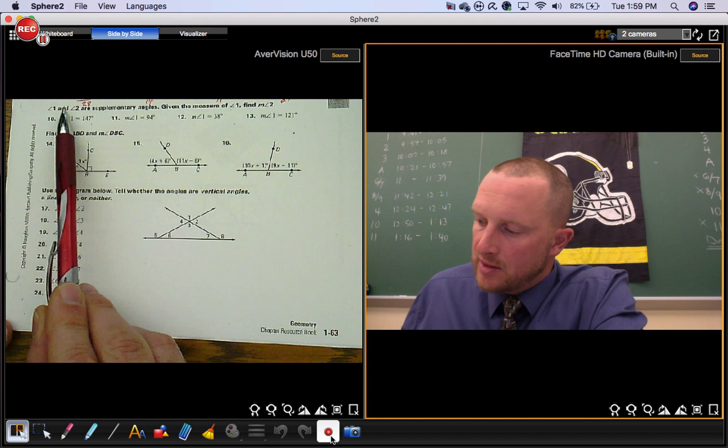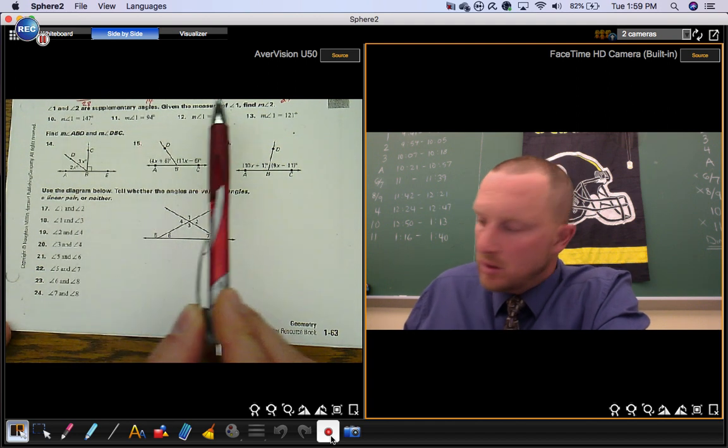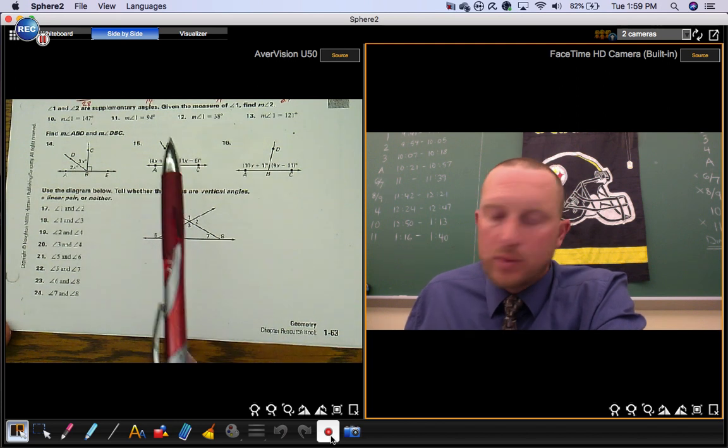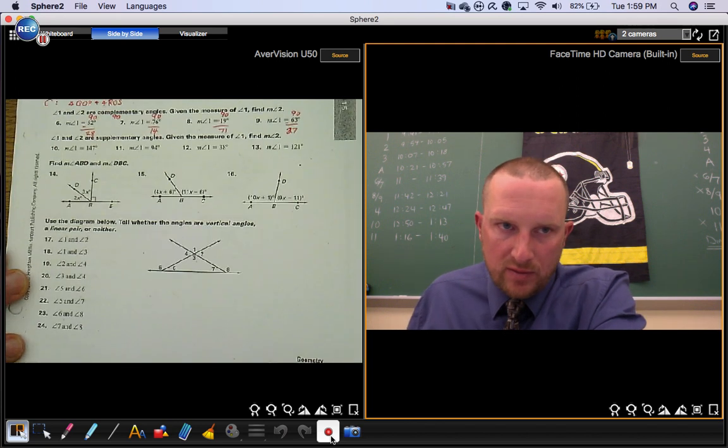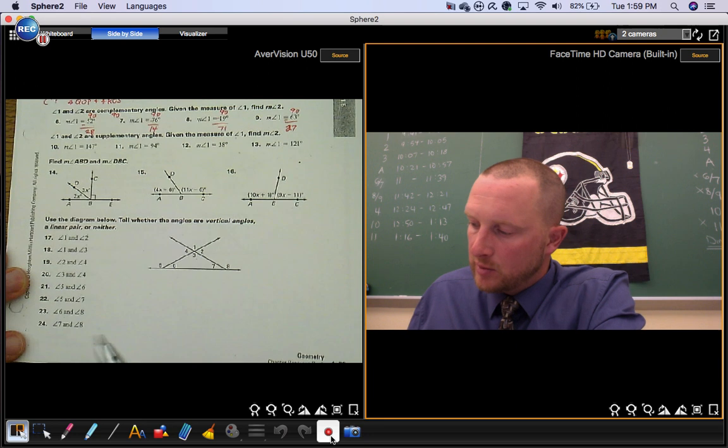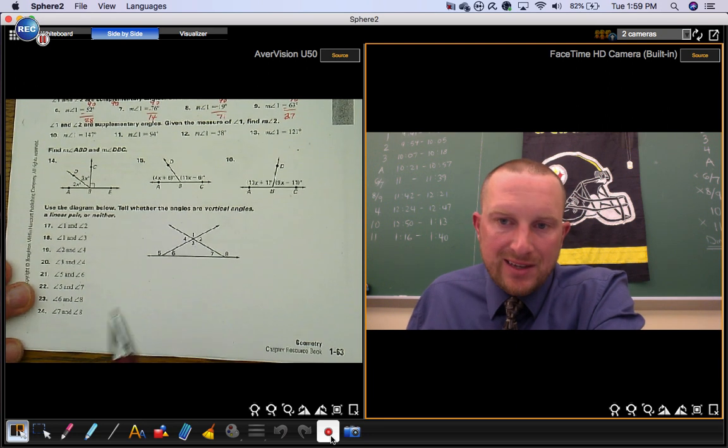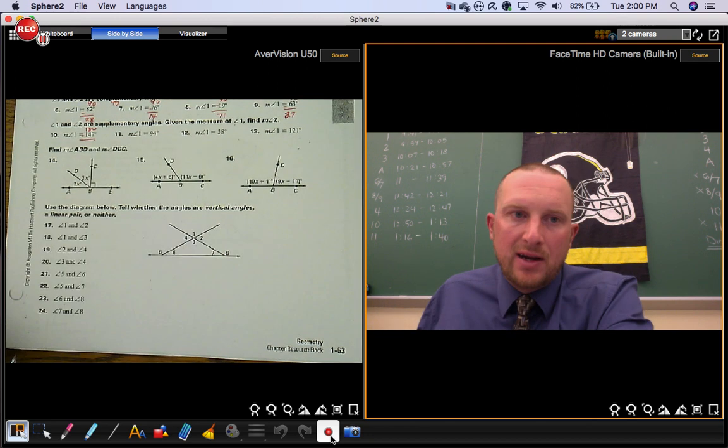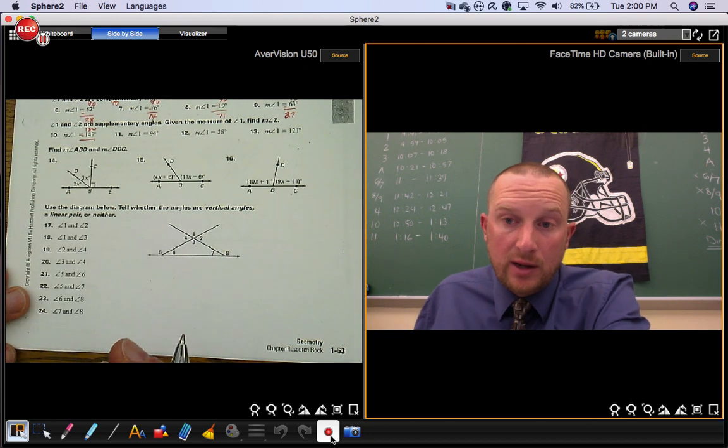In number 10, they're telling you that angle 1 and angle 2 are supplementary angles. Given the measure of angle 1, find the measure of angle 2. So it's just like the one we did previously, except now the angles are supplementary. So now together angle 1 and angle 2 add to 180. So you're just doing 180 minus each of these angles to figure out what angle 2 is.